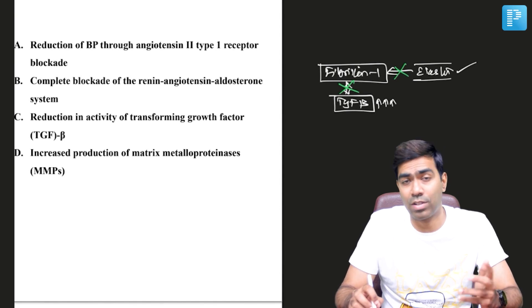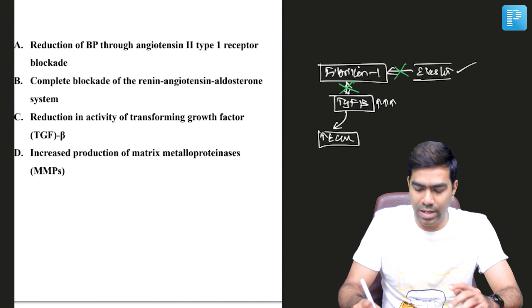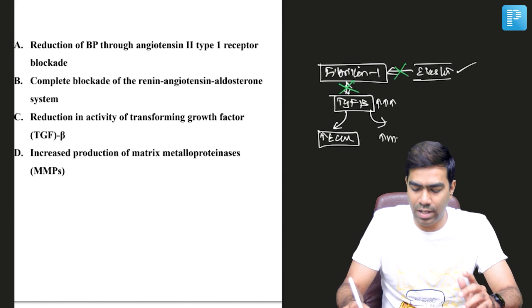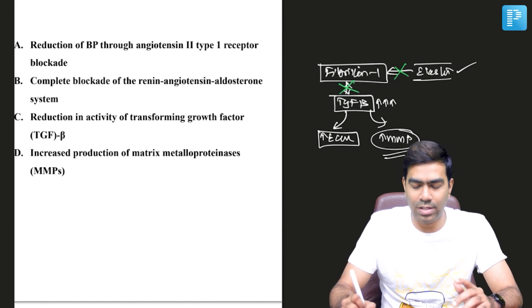Transforming growth factor beta results in increased deposition of extracellular matrix in that area. At the same time, it will result in increased activation of matrix metalloproteinases as well, which will again cause disintegration of the matrix as well as your elastin.